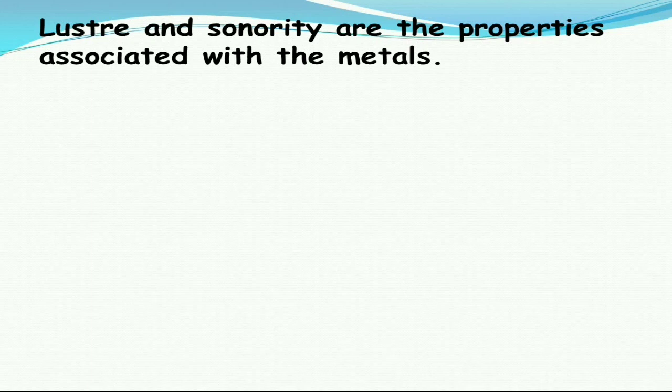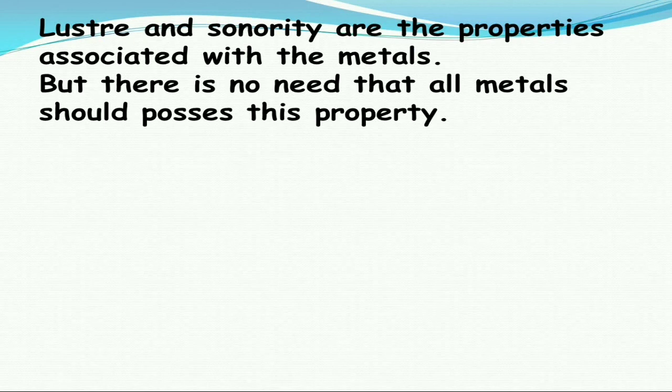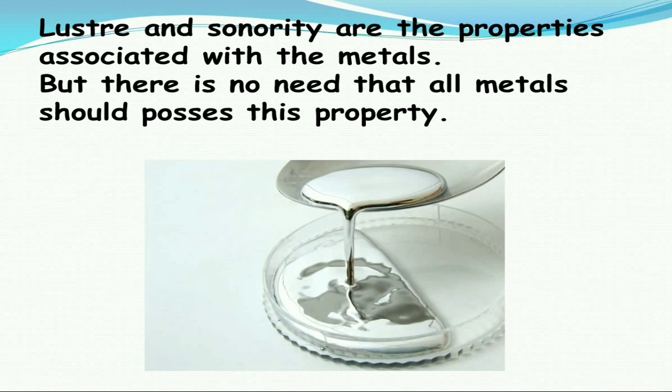Luster and sonority are properties associated with metals, but not all metals need to possess both properties. For example, mercury is the only metal in liquid state. Even though mercury has a shiny surface, it does not have the sonorous property.